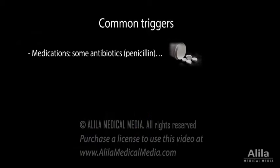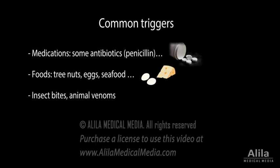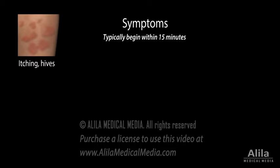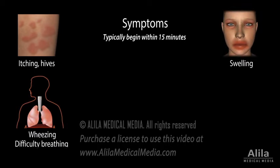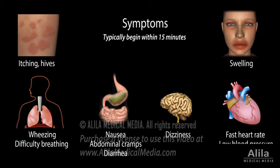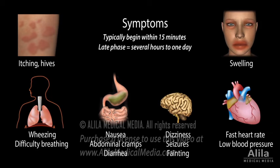Common triggers include certain medications, foods, insect stings, animal venoms, and latex. Symptoms typically begin within minutes to one hour of exposure and may include widespread itching, hives, swelling, wheezing and difficulty breathing, nausea, abdominal cramps, diarrhea, dizziness, a fast heart rate, and low blood pressure. Shock may develop within minutes. Patients may have seizures or faint. There is also a late-phase response, usually less severe, within several hours to one day.